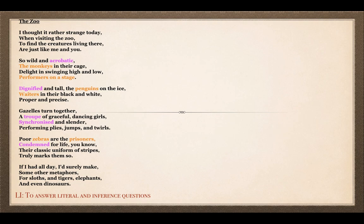We have a new poem today called 'The Zoo,' and we're continuing with our animal theme. We've done quite a few poems related to animals, which is important because I'm trying to find an area where you become more confident. You have good knowledge about different animals, so when it comes to reading and writing, you have a sound background to help you understand and write more easily.